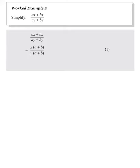The first step is to factorise whatever we can. In this case, we take out the common factor on the top and on the bottom. X is the common factor of the numerator, and Y is the common factor of the denominator.